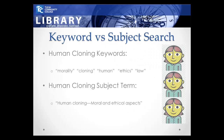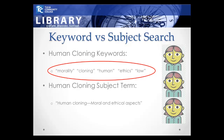Let's explore the difference between keyword searching and subject searching. For example, let's say that you're writing an opinion paper on human cloning. To do a keyword search, you'd think of a lot of different phrases to describe what you're looking for, such as morality, cloning, human, ethics, law, etc.